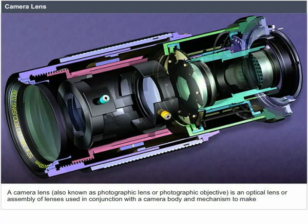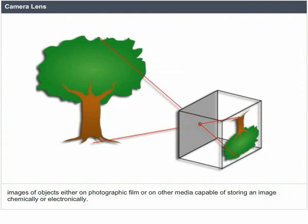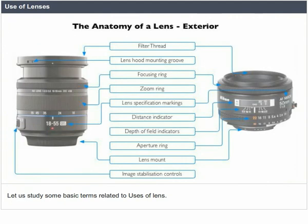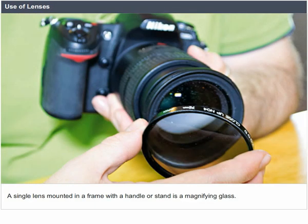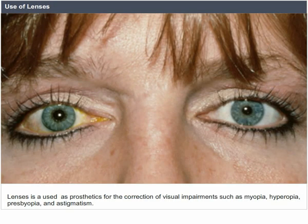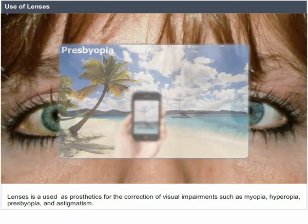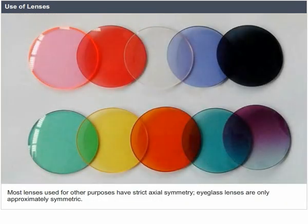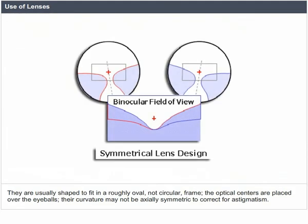Camera lens. A camera lens, also known as a photographic lens or photographic objective, is an optical lens or assembly of lenses used in conjunction with the camera body and mechanism to make images of objects either on photographic film or on other media capable of storing an image chemically or electronically. A single lens mounted in a frame with a handle or stand is a magnifying glass. Lenses are used as prosthetics for the correction of visual impairments such as myopia, hyperopia, presbyopia, and astigmatism. Most lenses used for other purposes have strict axial symmetry, though eyeglass lenses are only approximately symmetric.